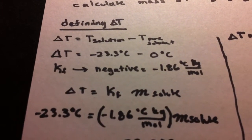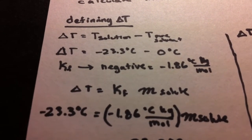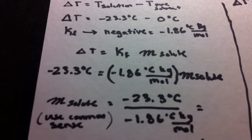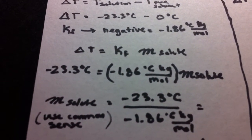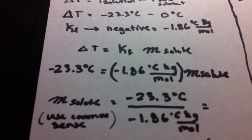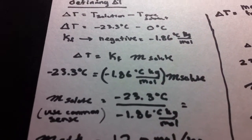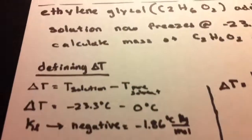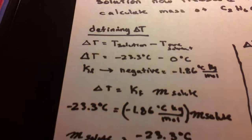But overall, the result should be the same, because when you plug it into your delta T equation and you're trying to find M solute, everything should cancel out. Because of course M solute can't be negative. So just use your common sense when you're given the KF value. If it's negative, that means it's going to apply to this definition of delta T.